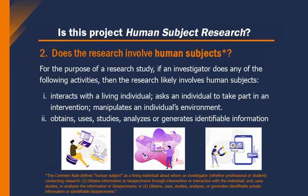First, if an investigator interacts with a living individual, asks an individual to take part in an intervention, and/or manipulates an individual's environment, then the research likely involves human subjects. Second, if an investigator obtains, uses, studies, analyzes, or generates identifiable information, then the research likely involves human subjects. The research study can have either the first or second research activity component, or include both types of research activities, and be considered human subject research.